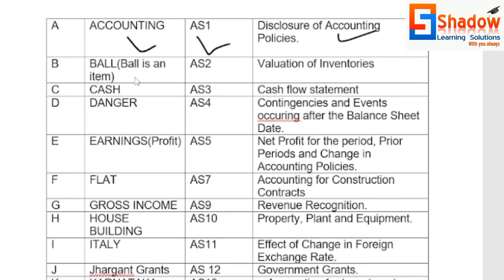B for Board — Inventory. AS2, Valuation of Inventories. C for Cash — AS3, Cash Flow Statement.